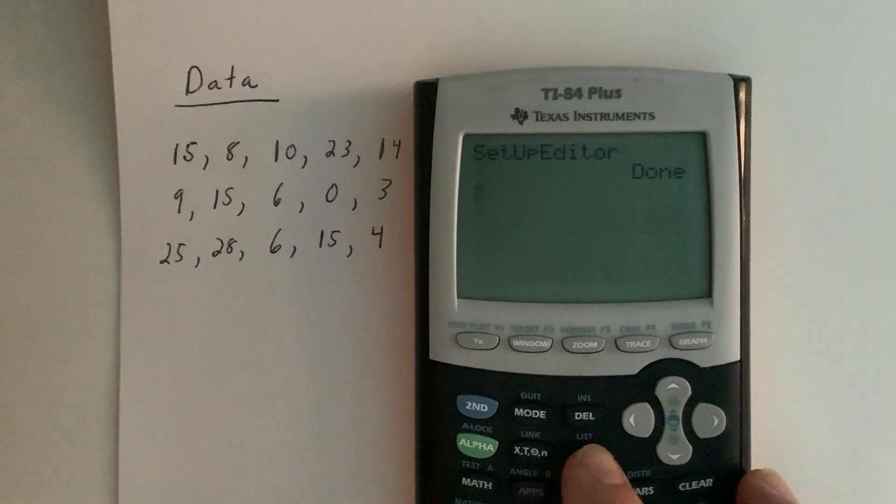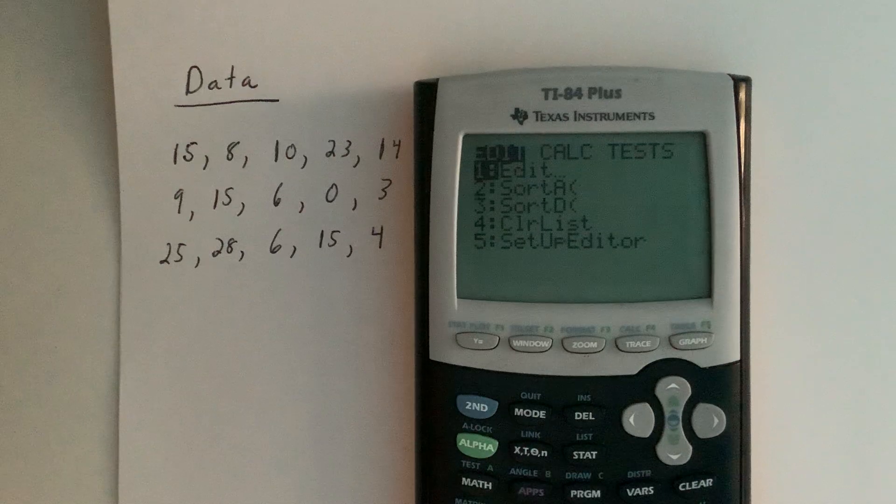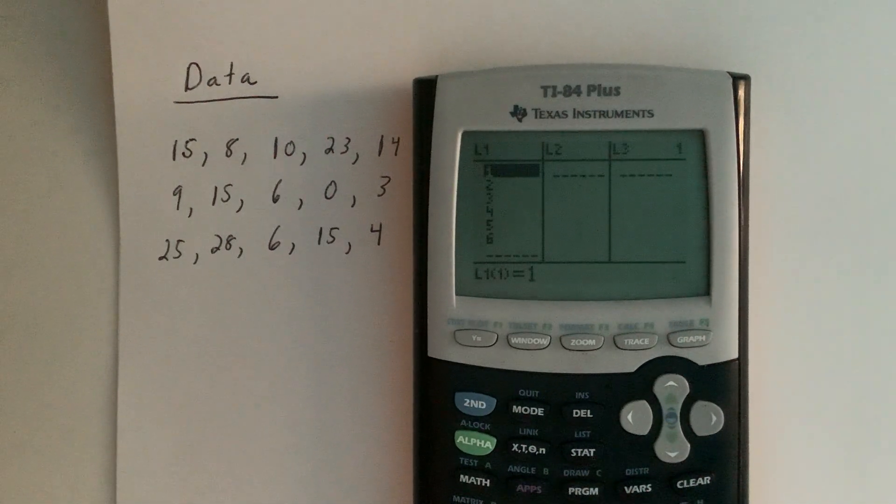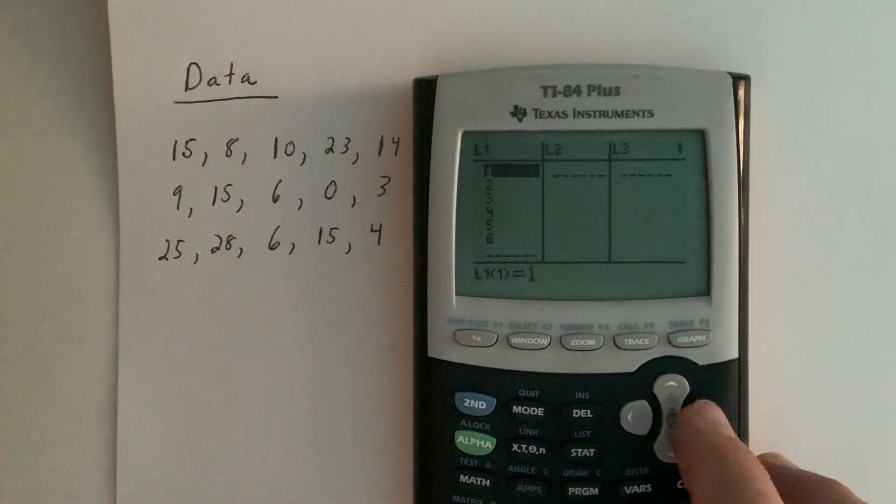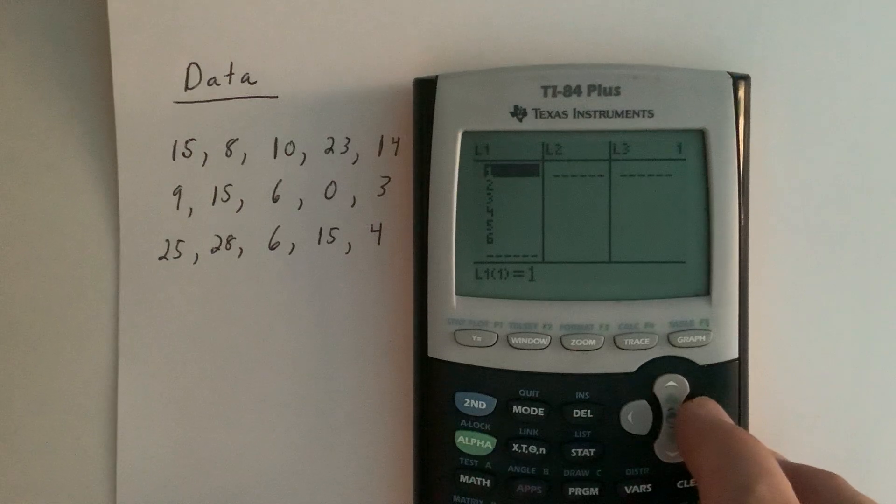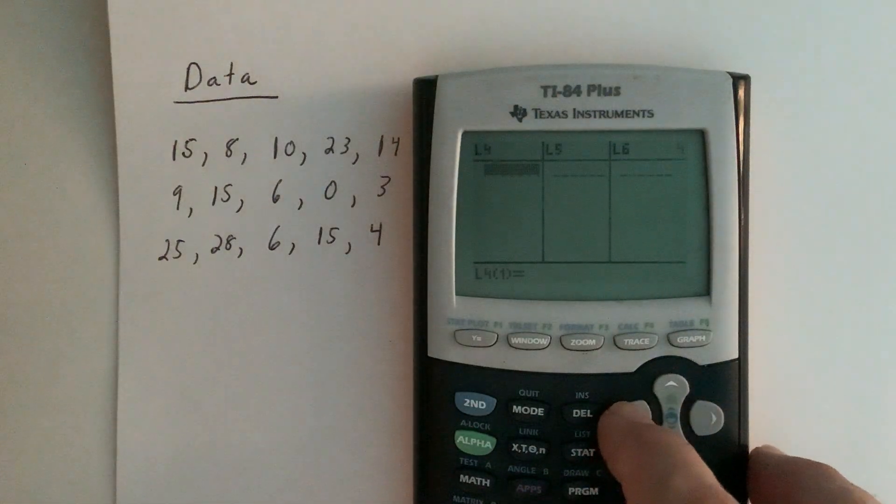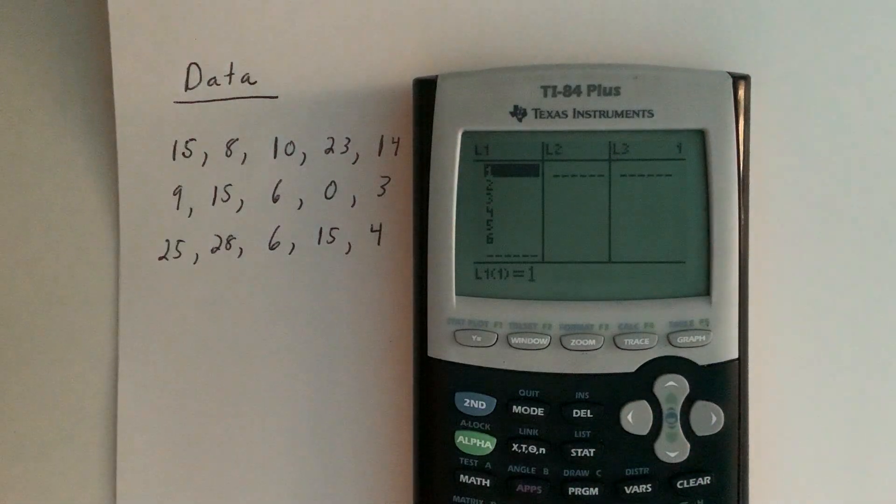Let's go back and actually get this data in here. We'll hit the STAT key, and since our cursor is already on edit, we'll go ahead and hit enter, and this will bring us into our list menu. Most of the TI calculators let you have six lists—L1, L2, L3, L4, L5, and L6. We're going to use L1. Sometimes in our class we might use L1 and L2 together, but most of the time we can just use the first list.